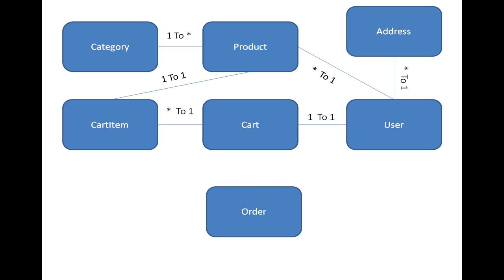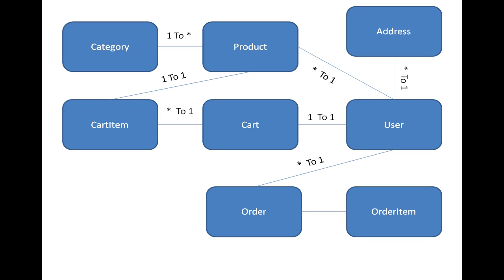Next we have an order entity. Every order belongs to a user, and one user can place multiple orders, so there is a one-to-many relationship between user and order. Every order will have multiple order items, giving another one-to-many relationship, and every order item has a one-to-one relationship with the product. You can change this design as per your needs.